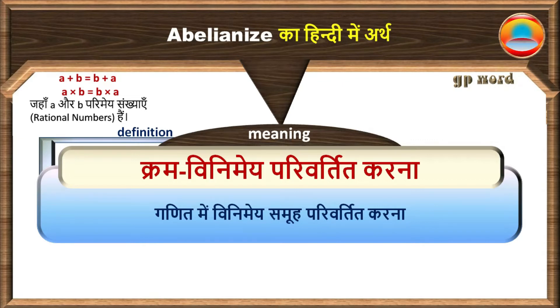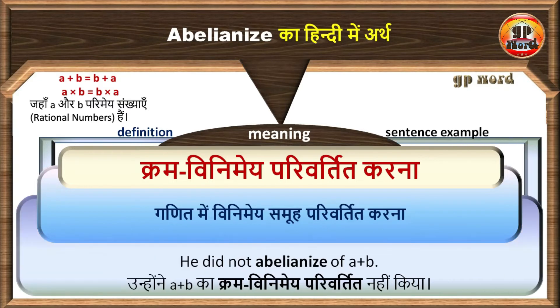Let's know with sentence example: He did not abelionize A plus B. Unhohne A plus B ka tram vini mein pariwarthit nahi kia.